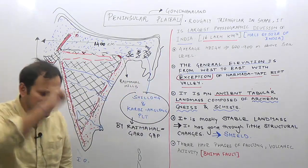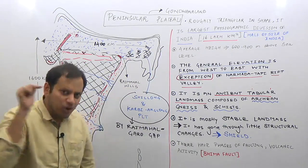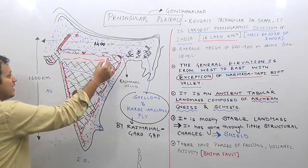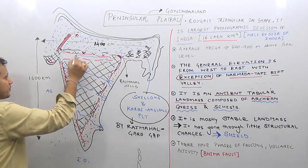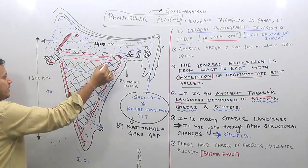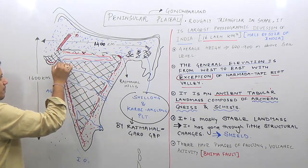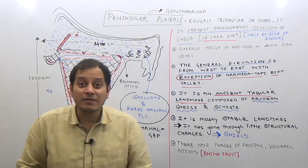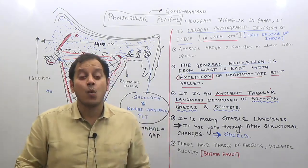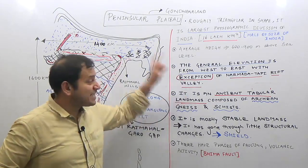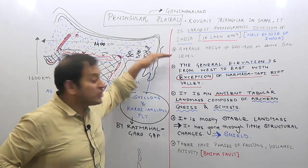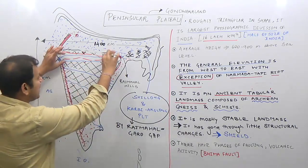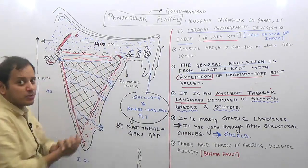However, two rivers flow to the west: River Narmada and River Tapi. This is because, except for the entire peninsular plateau which tilts towards the east, these two rivers flow through a rift valley that tilts towards the west.